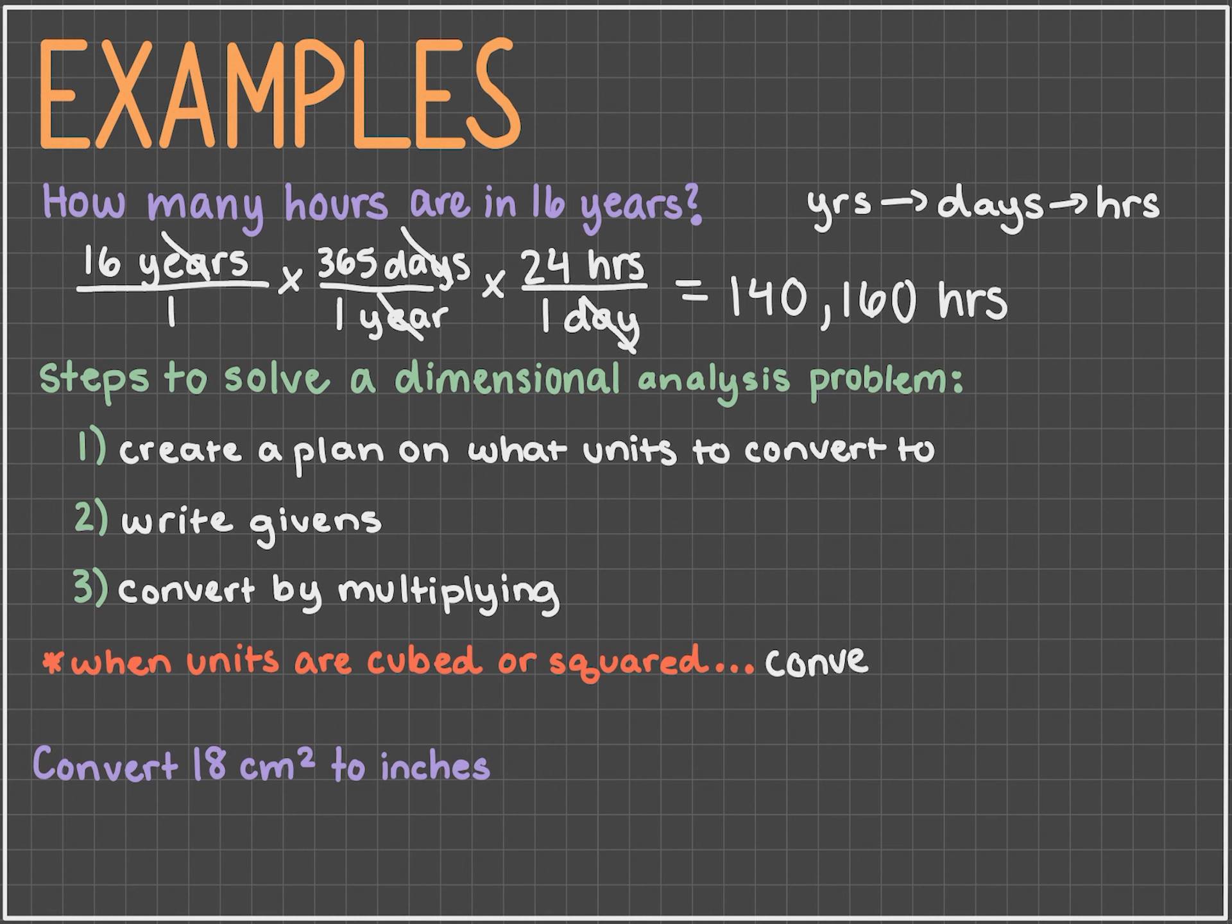There's one more important thing to note when it comes to dimensional analysis. If the units we start with are cubed or squared, conversion factors also must be cubed or squared. Let's say we're converting 18 centimeters squared into inches. We first write our plan, so we can convert centimeters directly into inches. And now we can write out our given, 18 centimeters squared. Now there are 2.54 centimeters in an inch, so we're multiplying 1 over 2.54 by 18 centimeters squared.